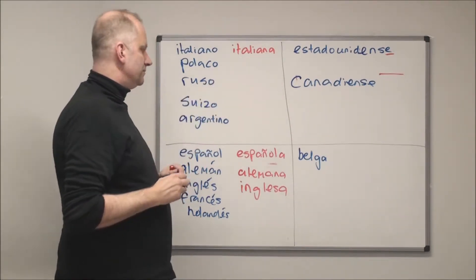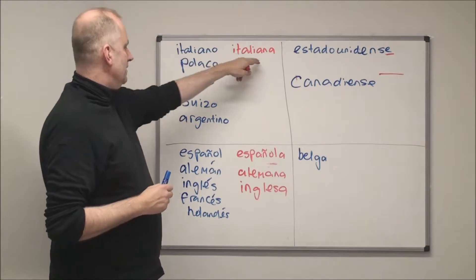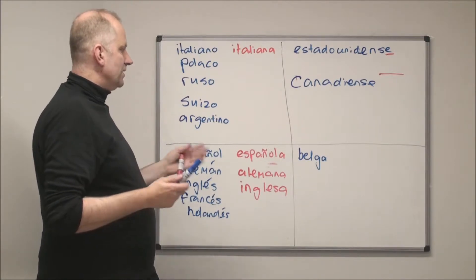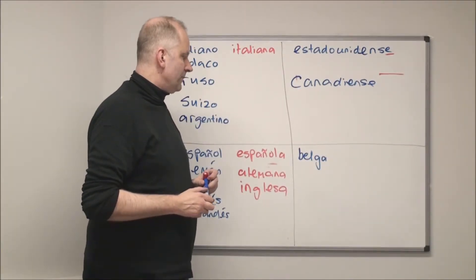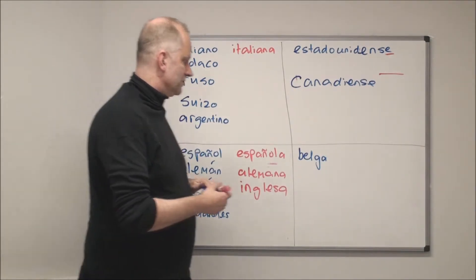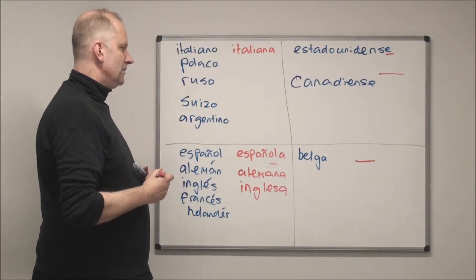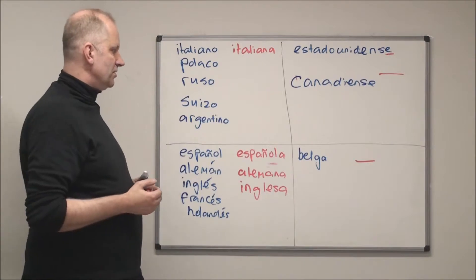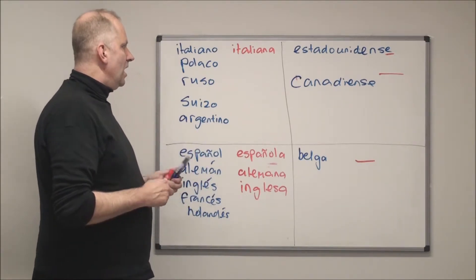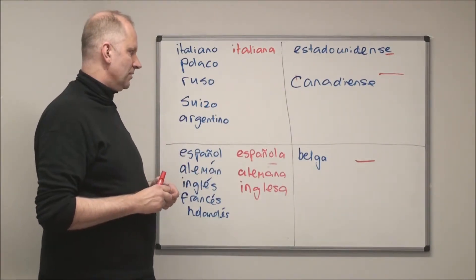There aren't that many nationality adjectives ending in -e. The final group is ones where the masculine adjective ends in -a, and like those ending in -e, there's no change in the feminine. To talk about a Belgian man you'd say 'él es belga' — for example, Kevin De Bruyne is Belgian. For a Belgian woman, 'ella es belga' — it doesn't change.